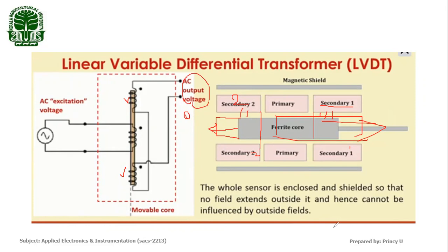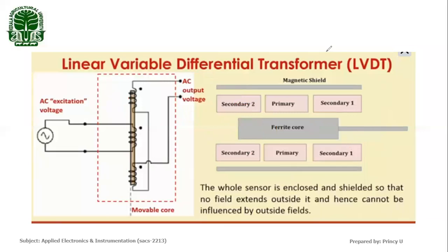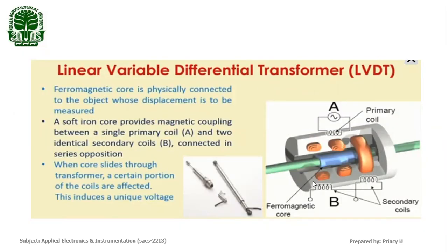The whole sensor is enclosed in a shielded core. The reason for shielding is that it should not be influenced by external magnetic fields, and also the magnetic field produced by the primary and secondary coils should not go outside. This reduces losses and avoids all external influences — the entire arrangement is covered with a total shield.